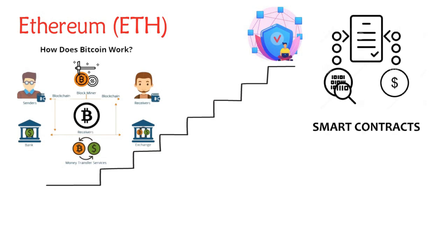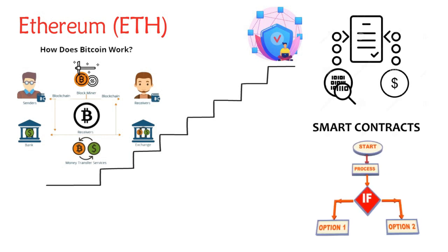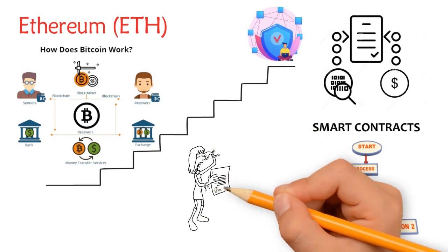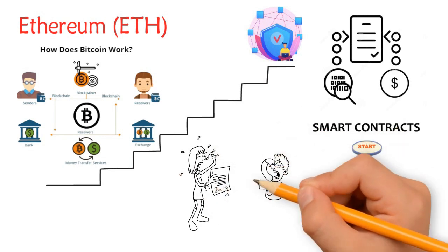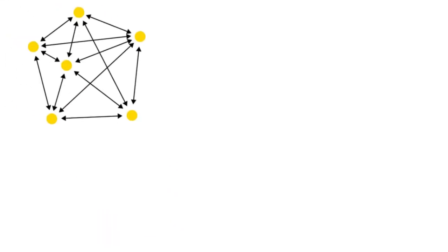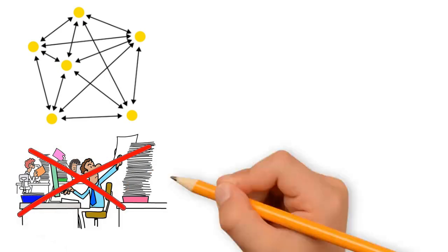These are if-else statements written in a programming language and executed automatically when certain specific conditions are met. They are embedded into the blockchain. Smart contracts prevent the failure that was inherent in traditional contracts, and they offer decentralized functioning, avoiding human intervention and without compromising security.